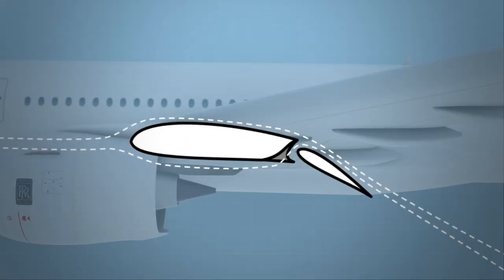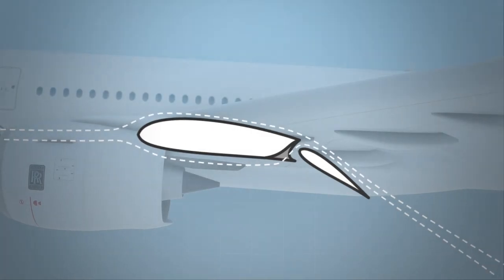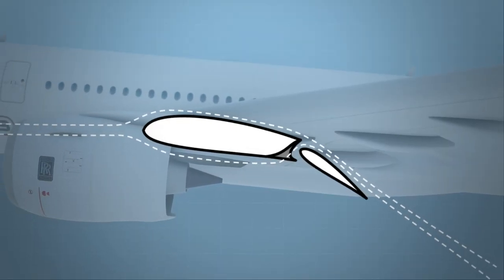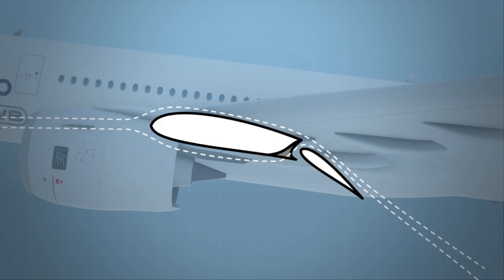As the flap is deployed, lift increases with camber, but flow separation is avoided by allowing some air to be redirected from the lower to the upper surface.